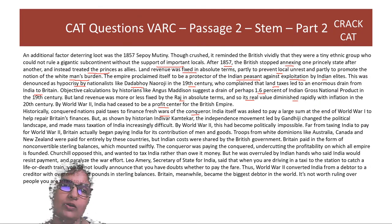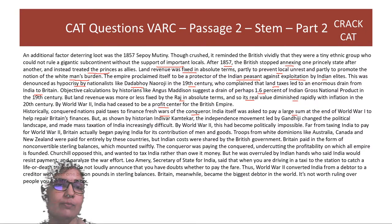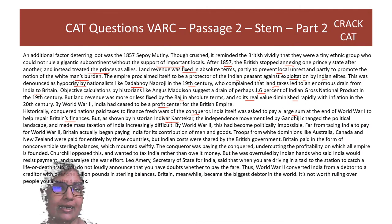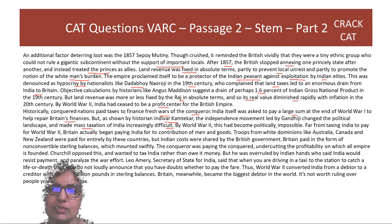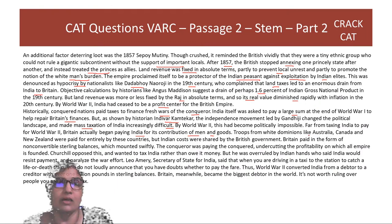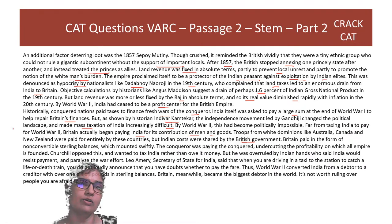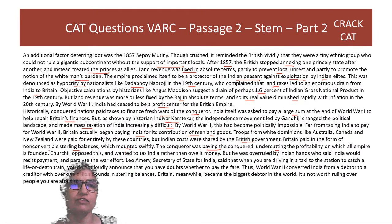Nationalists like Dadabhai Naoroji denounced this as hypocrisy, complaining that land taxes caused an enormous drain from India to Britain — estimated by historian Angus Maddison at perhaps 1.6% of India's GDP in the 19th century. But because land revenue was fixed in absolute terms, its real value diminished rapidly with inflation. By World War II, India had ceased to be a profit centre for the British Empire. Historically conquered nations paid taxes to finance the conqueror's fresh wars, but Gandhi's independence movement made mass taxation of India increasingly difficult and by WWII politically impossible.